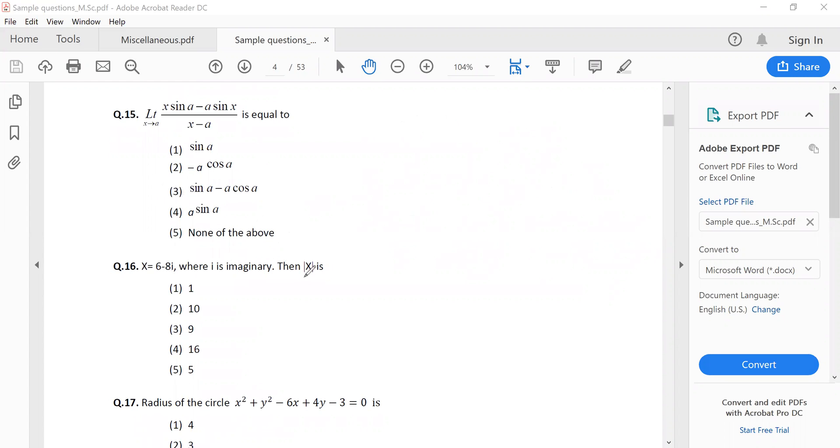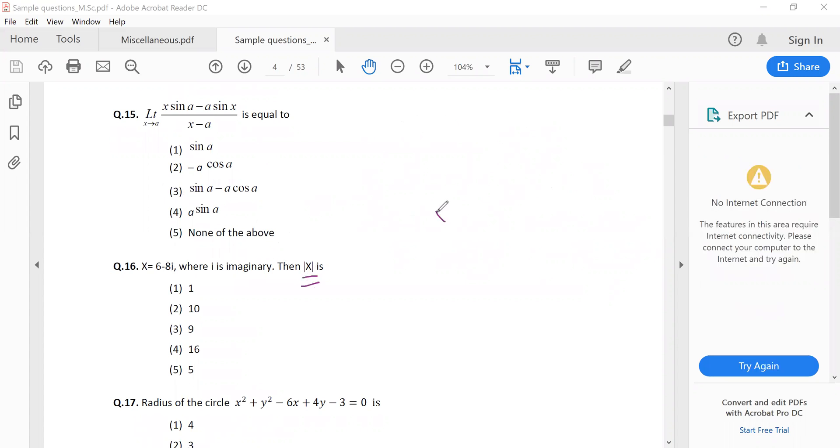We have to find the value of mod x. The mod x value is square root of 6 squared plus 8 squared. For polar coordinates...